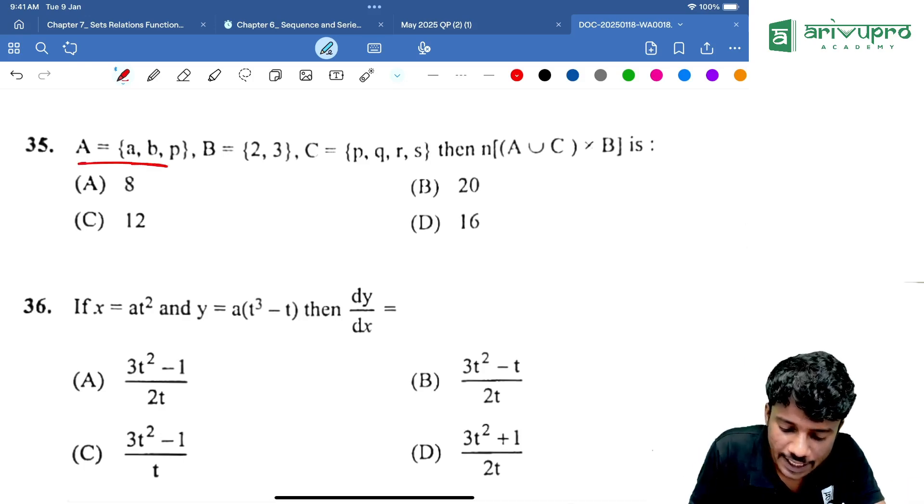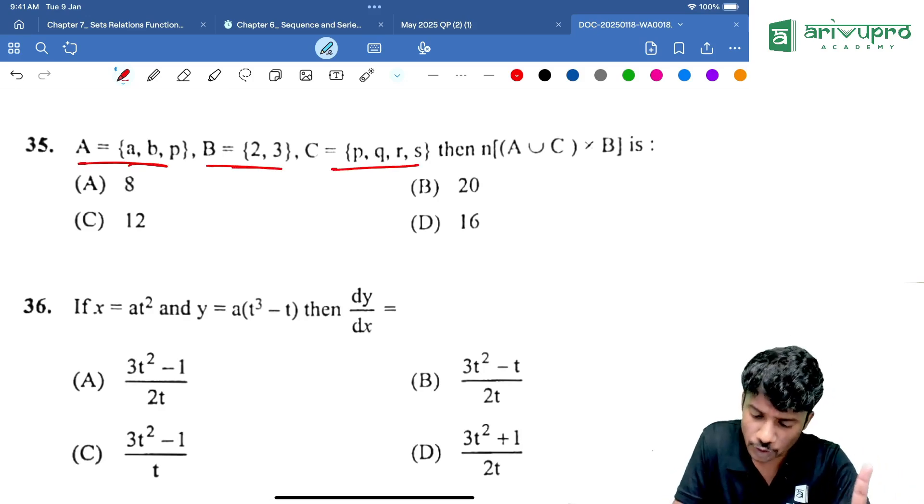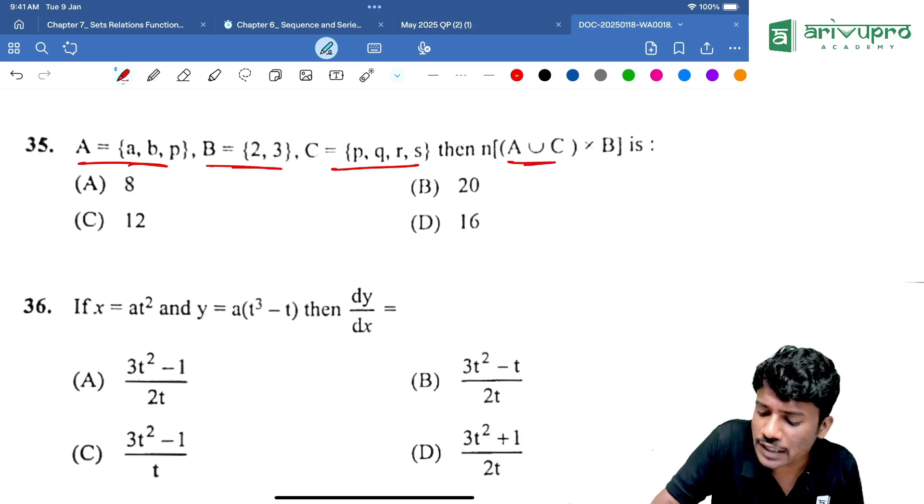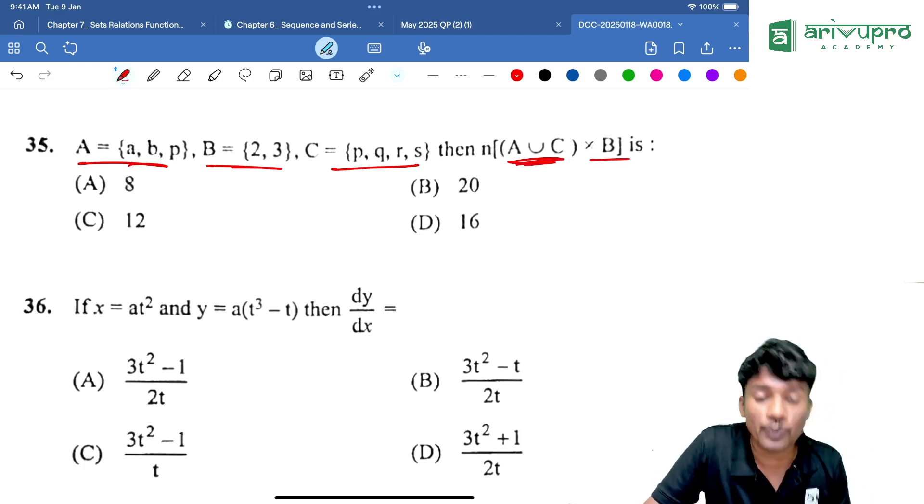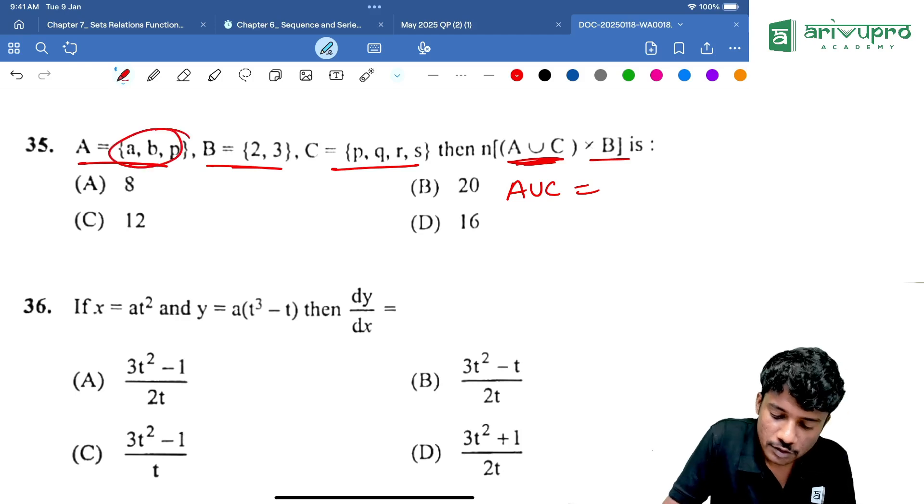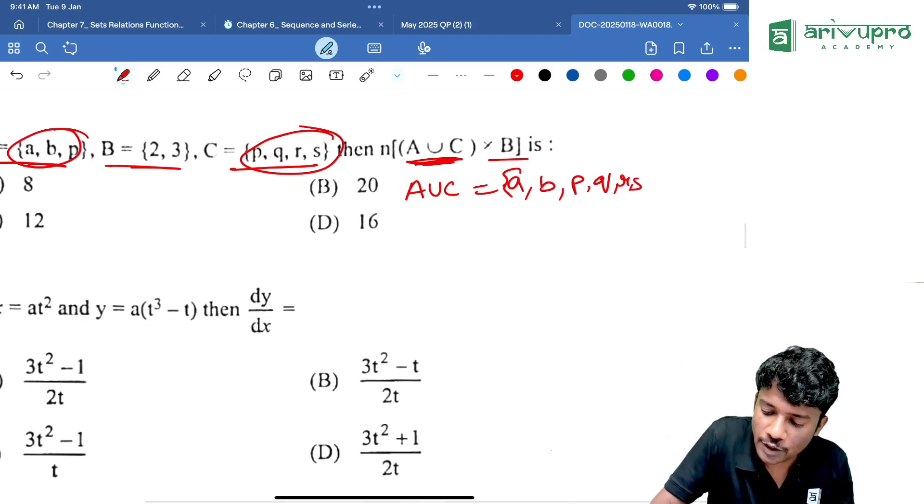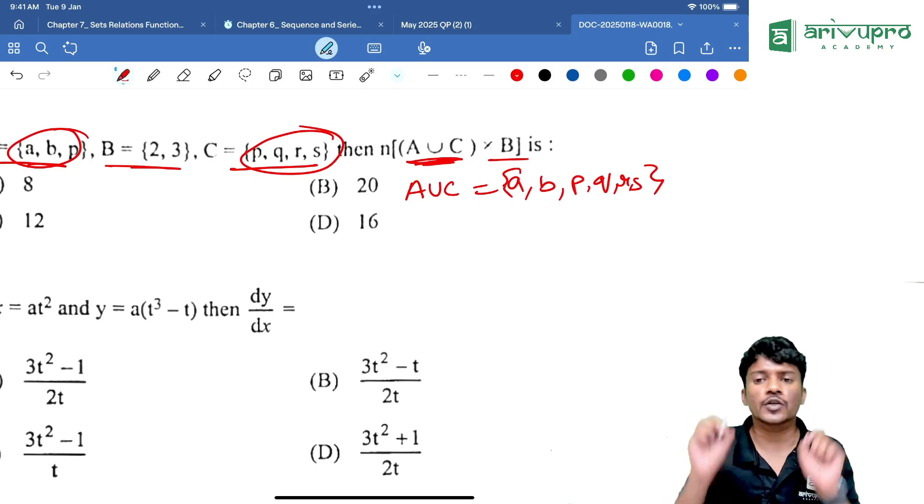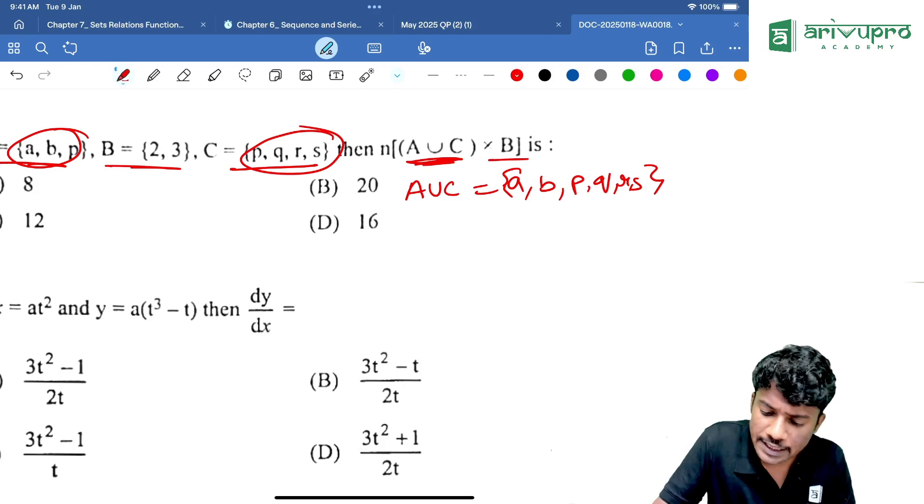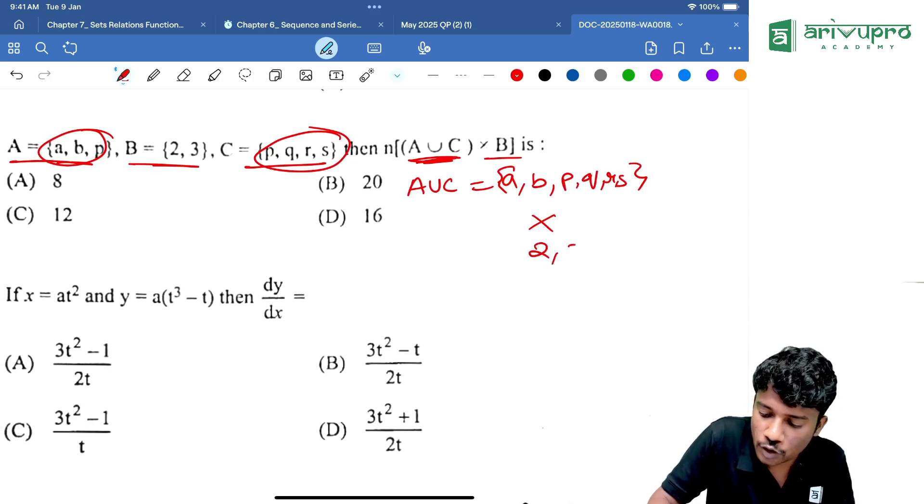Find the value of this. Set A is given like this. Set B is 2, 3. Then set C is PQRS. Then A union C into B. That means first you need to find A union C. What is A union C? A union C is nothing but whatever is there in both the set. That is A comma B. Then P, Q, R, S. That means A union B is equal to A, B, P, Q, R, S. Then this thing we need to multiply it with B. That is 2, 3.